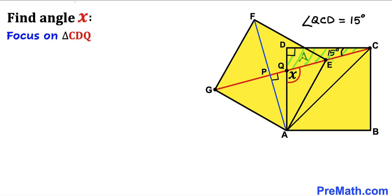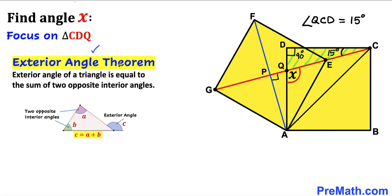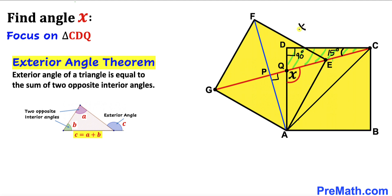Now let's focus on right triangle CDQ. We know this is our 90 degree angle. Recalling the exterior angle theorem — the exterior angle of a triangle equals the sum of the two opposite interior angles — angle X is the exterior angle for triangle CDQ, equal to the sum of the two opposite interior angles: 90 degrees plus 15 degrees. Therefore angle X turns out to be 105 degrees.